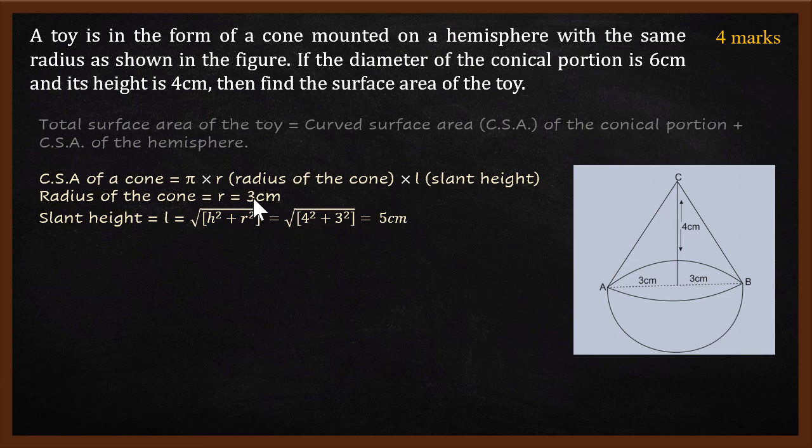Where did we find this 3 cm? We found this 3 cm from the diameter being 6 cm. Now, how do you find slant height? Slant height is given by square root of, this is Pythagorean theorem, h² plus r². Height squared plus r squared, which is 3 squared, gives you the slant height. So, 4² plus 3² is 25, which is square root 5 cm. So you get 5 cm as the slant height.